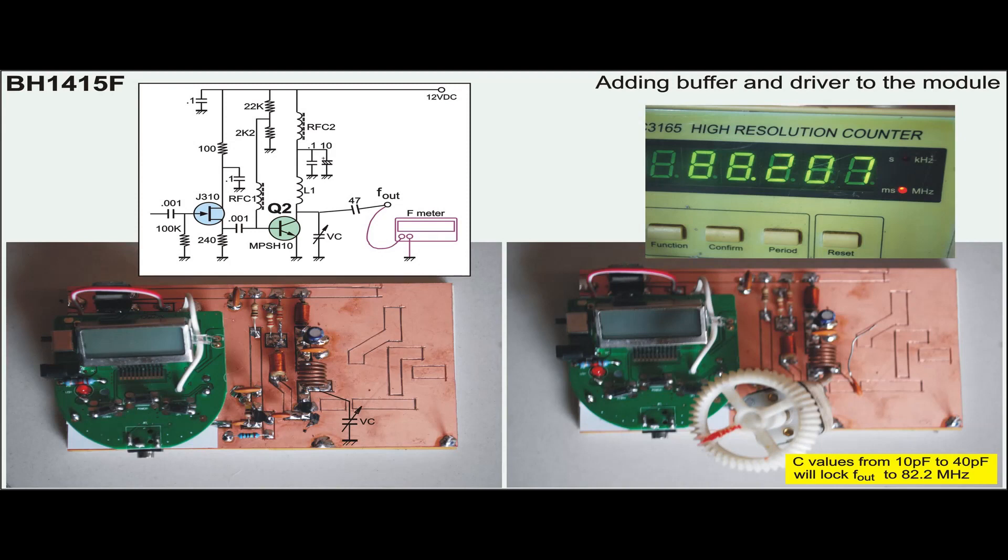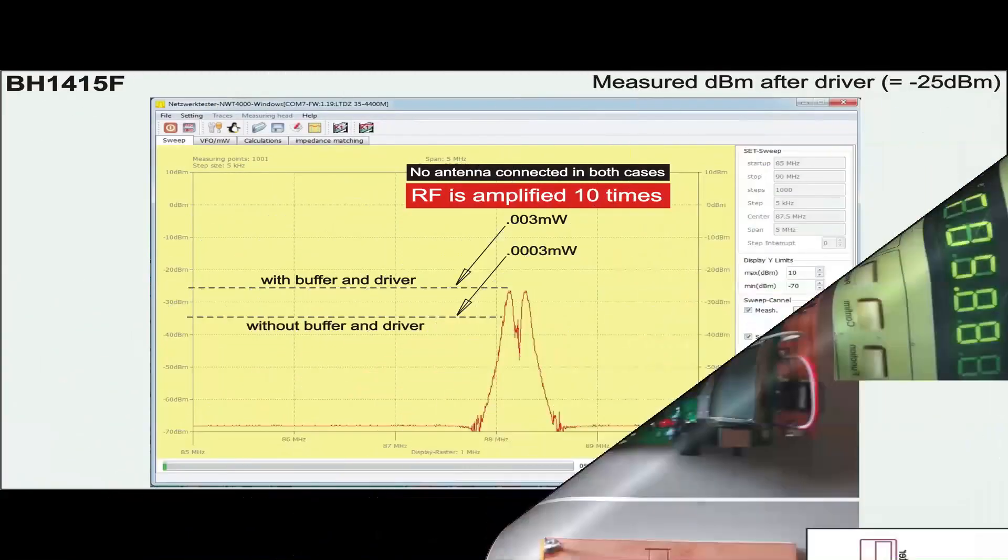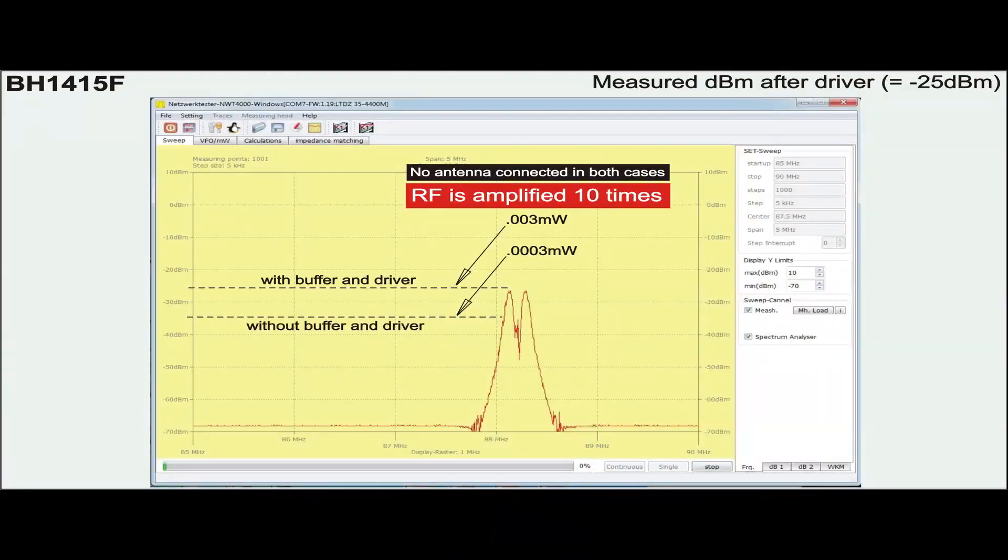This shows photo of the variable capacitor in the attempt to tune Q2 to resonate at 88.2 MHz. The spectrum analyzer reports that Q2 is outputting minus 25 dBm without any antenna connected. In this scenario, the buffer and the driver helped to amplify the original signal at pin 11, 10 times larger.